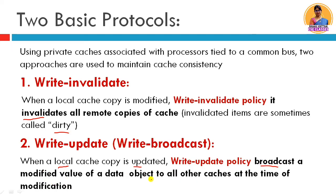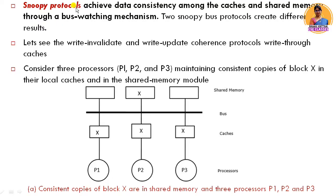Write update policy broadcasts the modified value of a data object to all other caches at the time of modification — that is why we call it write update. Snoopy protocols achieve data consistency among caches and shared memory through a bus watching mechanism. Snoopy protocols use this bus watching mechanism to keep caches coherent.